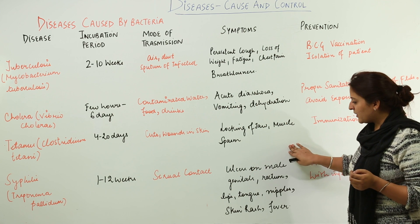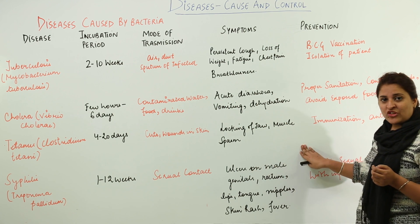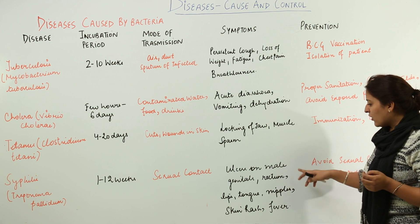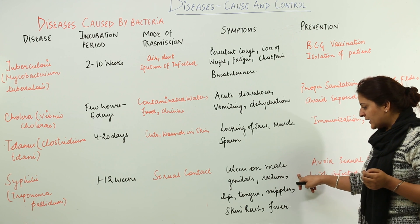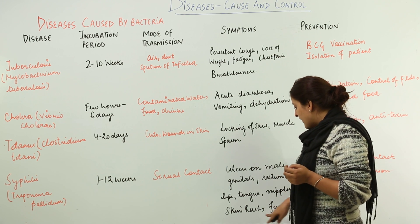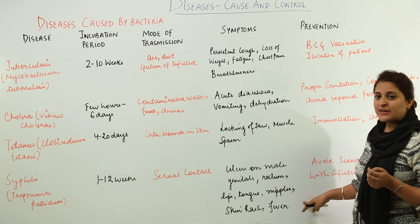The symptoms of syphilis include ulcers on the male genitals, ulcers on the rectum, lips, tongue, and nipples, as well as skin rashes and fever.